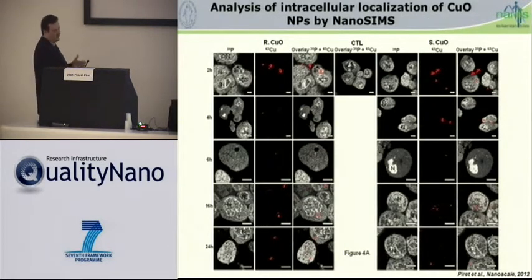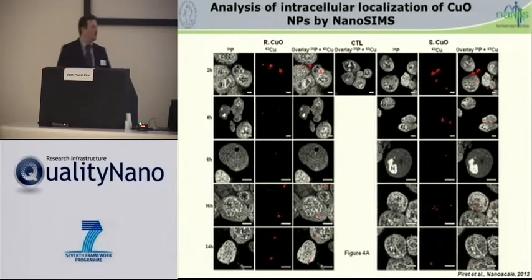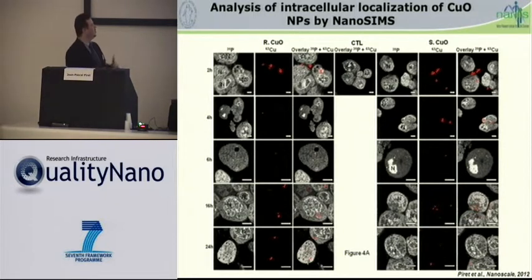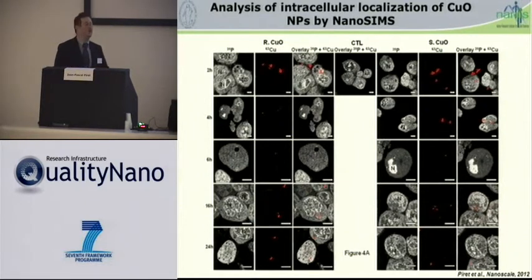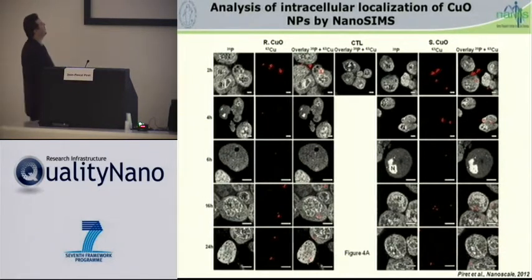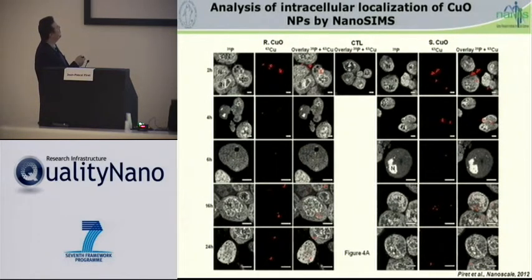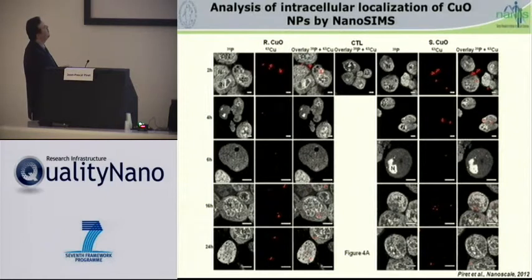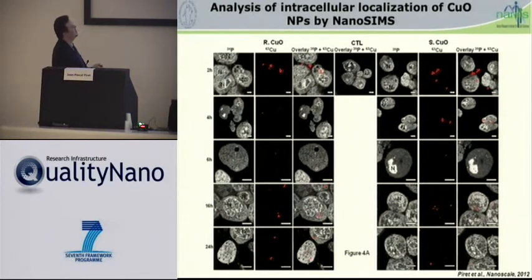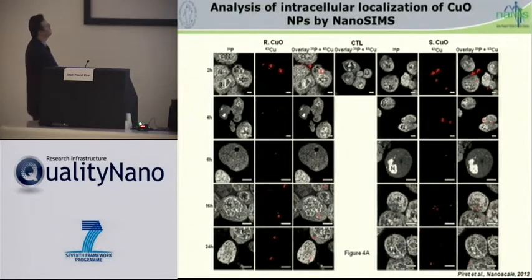As we observed that both nanoparticles could induce cytotoxicity on HepG2 cells, we wanted to know whether they could penetrate into HepG2 cells. So we used nanoSIMS, a technique allowing simultaneous analysis of up to five chemical elements. We analyzed the signal from phosphorus, allowing us to observe the morphology of the cells, and the signal from copper in red. For both nanoparticles, we were able to detect the presence of copper inside cells already after two hours of incubation.